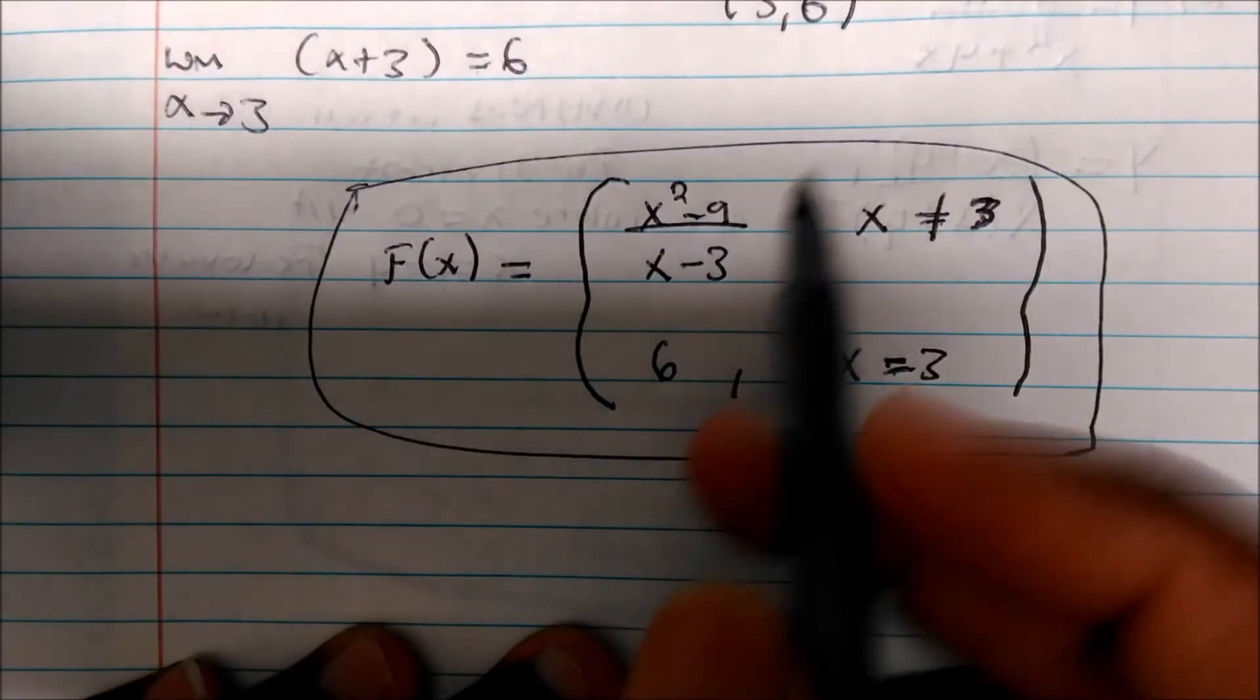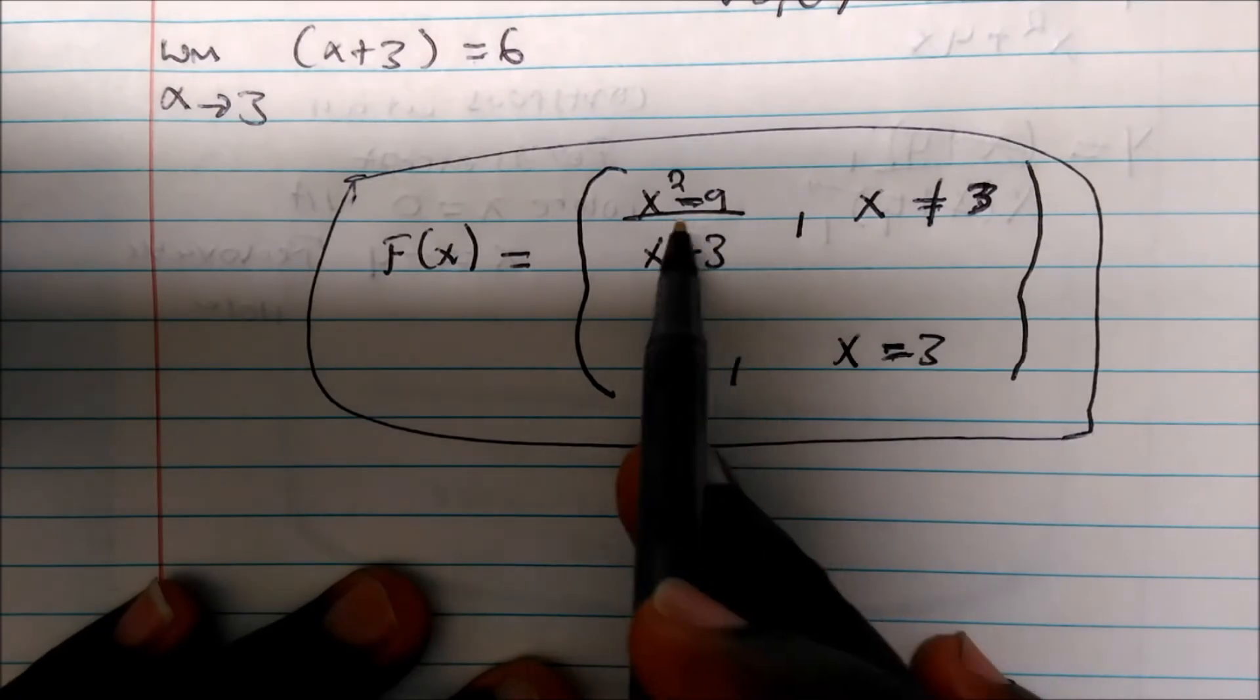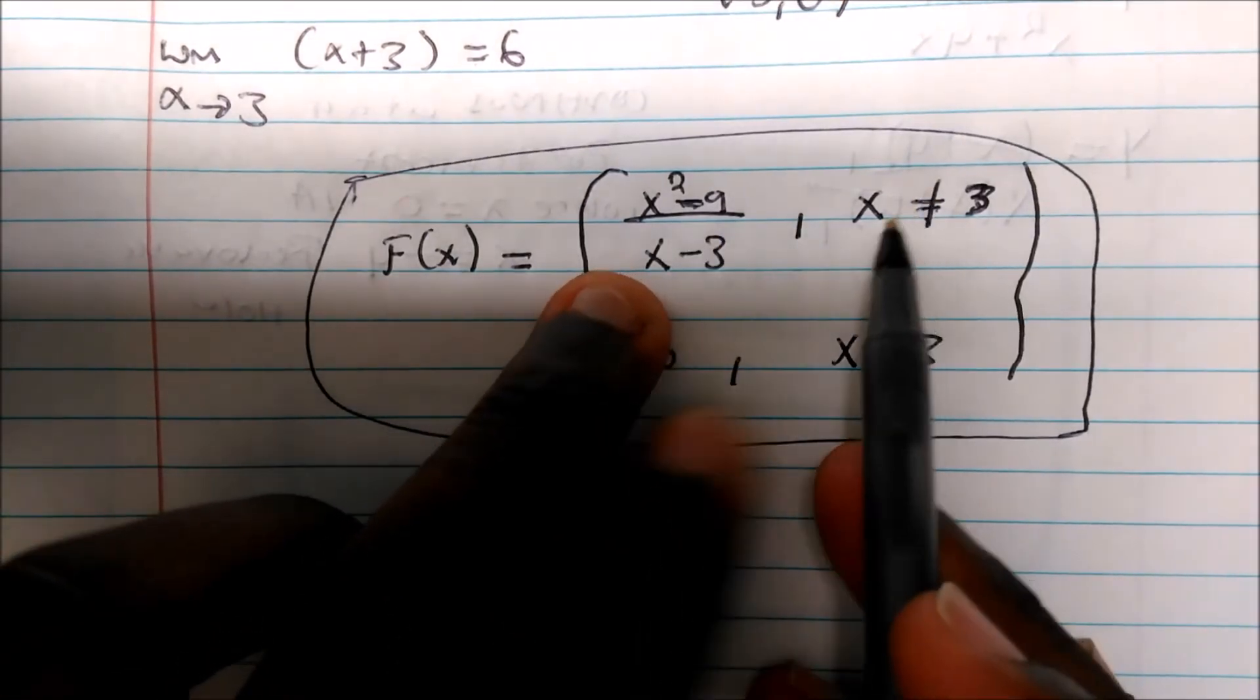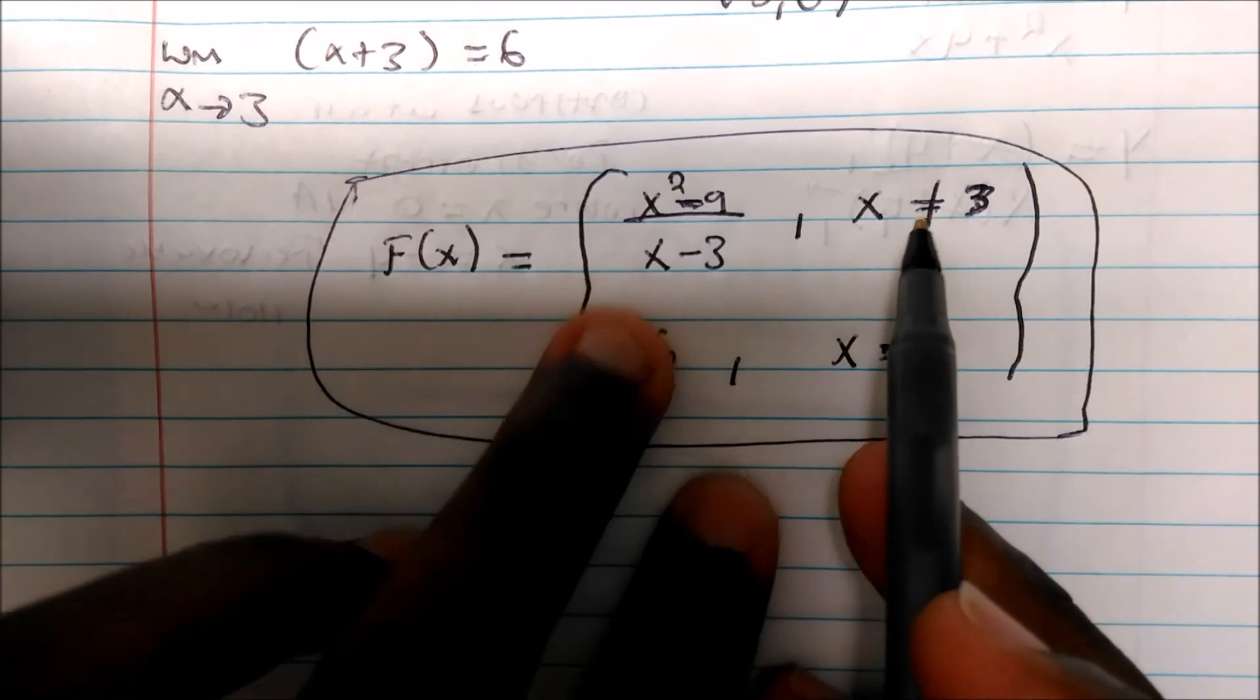This is telling you where if we graph this function, this piecewise function, this is what we're going to get. And basically what it's telling you is that at this function x cannot be equal to 3, so you're going to have that removable hole right there, that bigger hole right there.